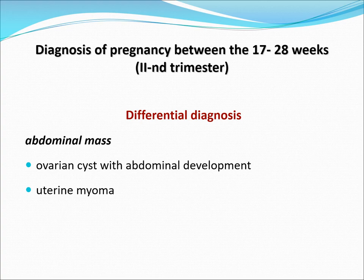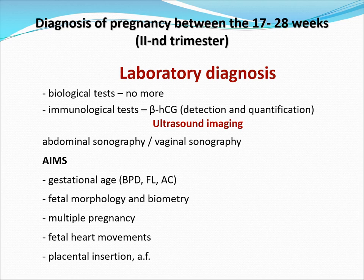Differentials would still be an abdominal mass, variances with abdominal development, and a uterine myoma. For laboratory diagnosis, your beta-HCG would have declined by this time, so it would not have as much of a role as in the first trimester. Imaging would be very important, such as your abdominal sonography and eventually your biophysical profile. It aims to look at gestational age — you look for your parameters: biparietal diameter, femoral length, and abdominal circumference. You look for fetal morphology and biometry, still look for multiple pregnancy, look for heart tones, and check if your placenta is in place.